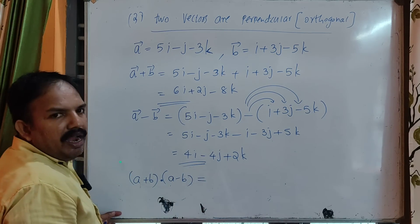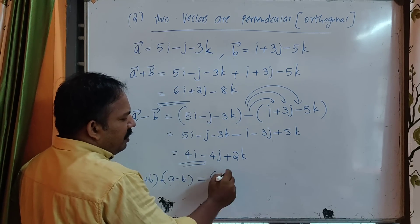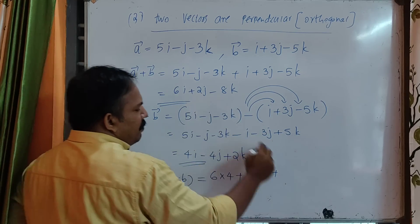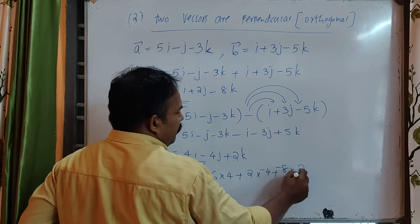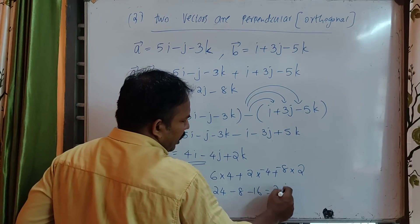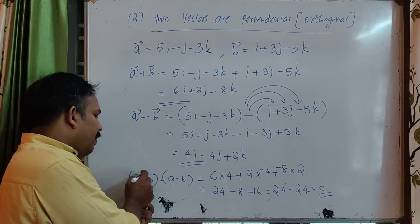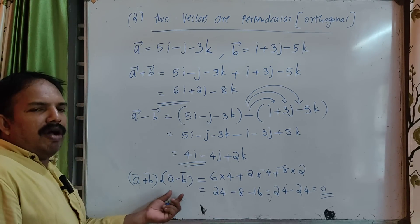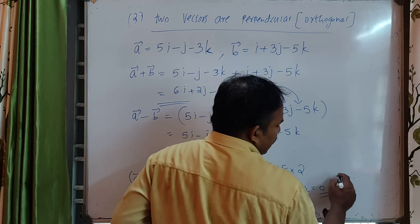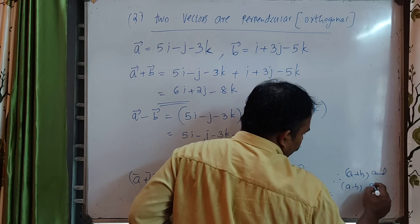Now we will compute (a plus b) dot (a minus b). That is (6i plus 2j minus 8k) dot (4i minus 4j plus 2k). The calculation gives 6 into 4 plus 2 into minus 4 plus minus 8 into 2, which is 24 minus 8 minus 16 equals 0.